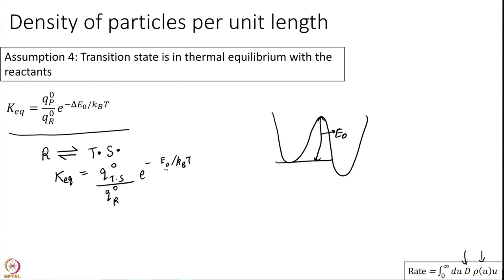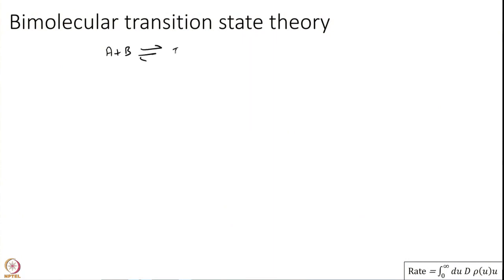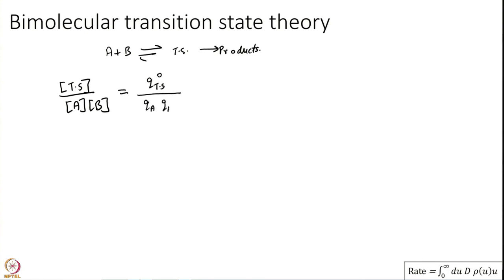We limit ourselves to a bimolecular case: A plus B going to transition state going to products. The equilibrium constant becomes concentration of TS divided by concentration of A times concentration of B, equal to Q_TS^0 divided by Q_A^0 times Q_B^0, multiplied by e^(-E_0 / k_B T). For multiple molecules, we multiply partition functions together. I have simply translated the reactants to A and B.